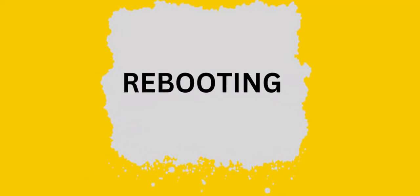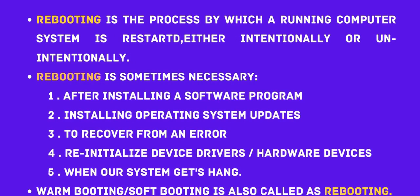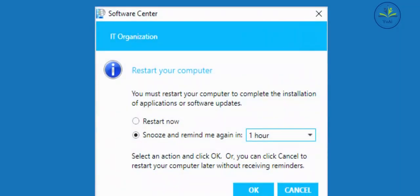Next is rebooting. Rebooting is a process by which a running computer system is restarted either intentionally or unintentionally. Rebooting is sometimes necessary after installing a software program, installing operating system updates, recovering from an error, re-initializing hardware devices, or when the system gets hacked. Warm booting or soft booting is also called rebooting. For example, this happens when you install new software and the system asks you to restart to complete the installation.